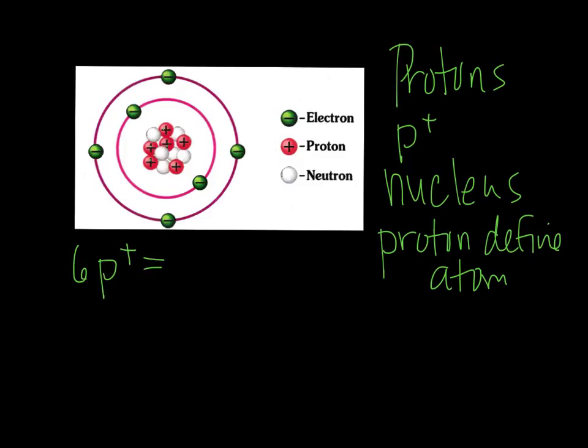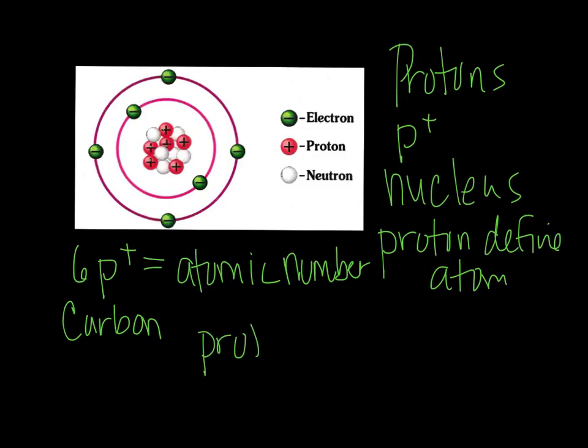So this element has an atomic number of six. And if you look on the periodic table, carbon has an atomic number of six. And every time we see six protons in a particle, we know that it will always be carbon. And remember that protons always have a mass, and they have a positive charge.